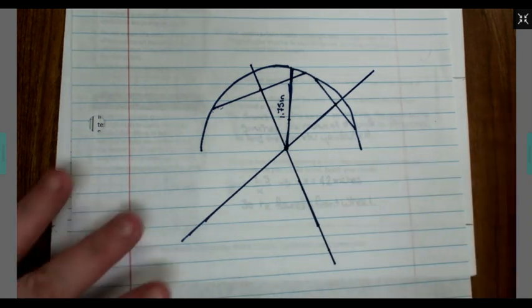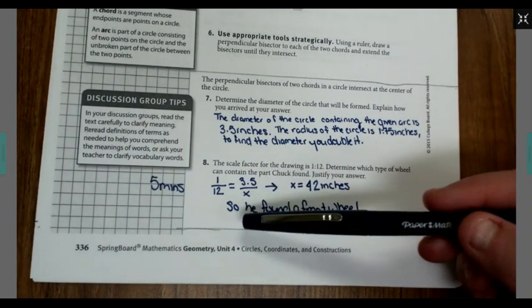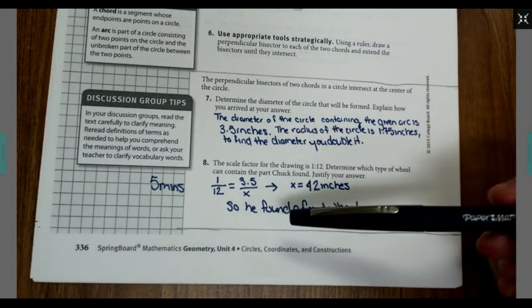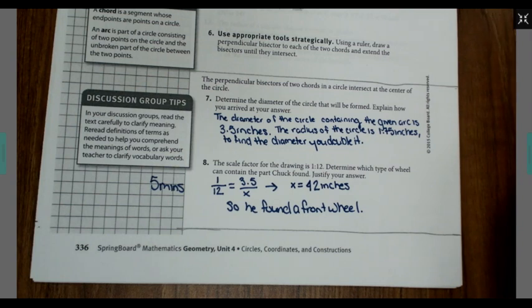So that gave me 3.5. For number eight, I set up a proportion of 1 over 12 equals 3.5 over X. Found that X was equal to 42. Therefore, he had the front wheel. On to the wrap-up of this lesson.